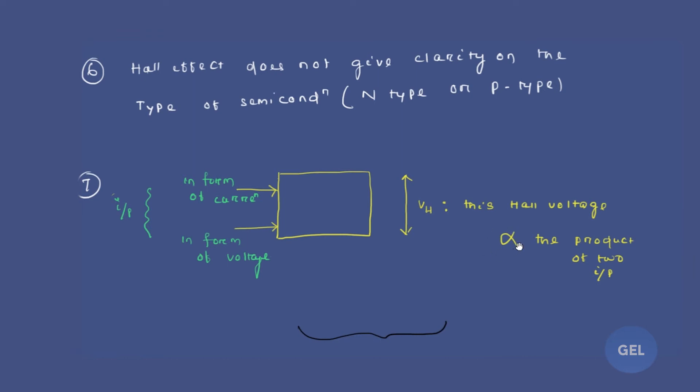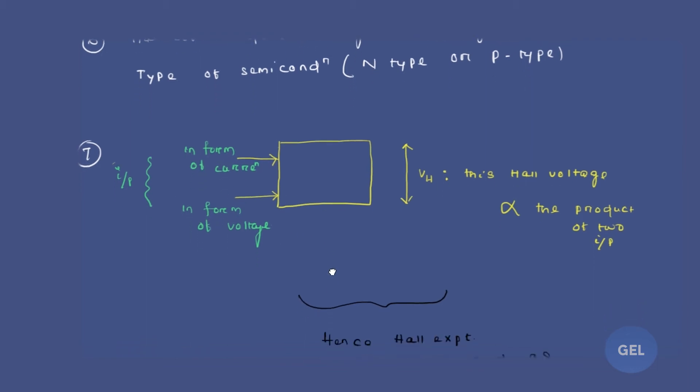Now this Hall voltage is always proportional to the product of two inputs: current and voltage. Please remember this point, this point is extremely important. So we can say Hall experiment can be used as Hall multiplier.